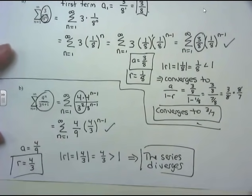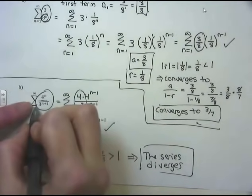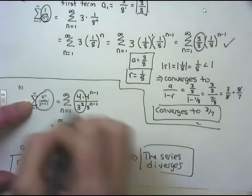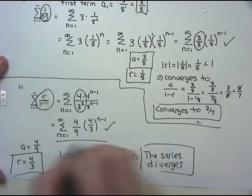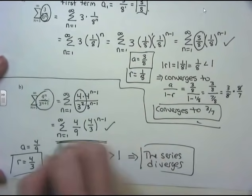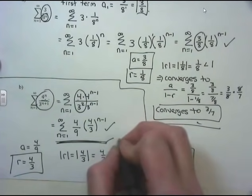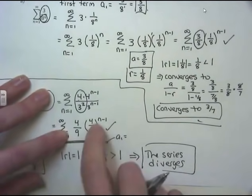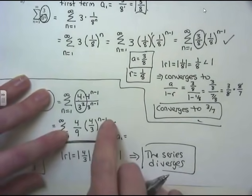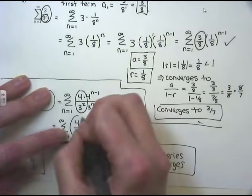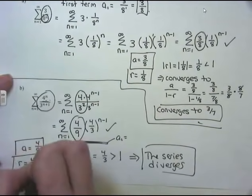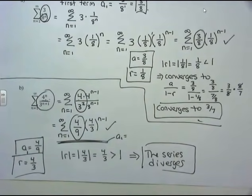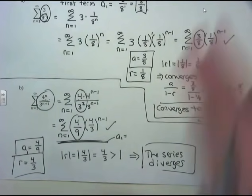We have already written our first term. a1, when you plug in n equals 1, gives you something raised to the 0 power, meaning you just get a. So the first term is that constant out front — it's because of how the geometric series is formed.